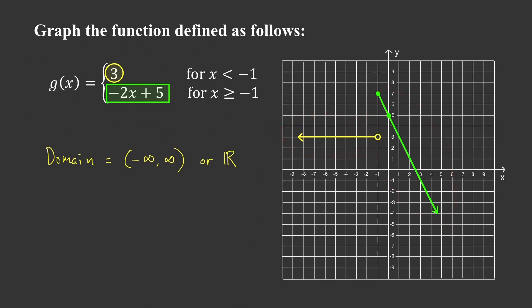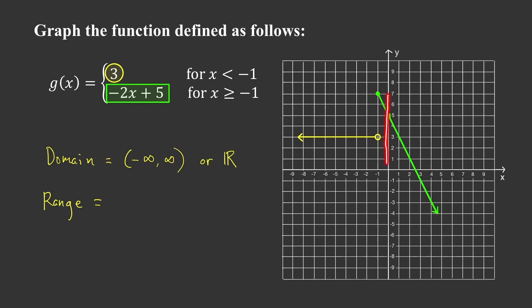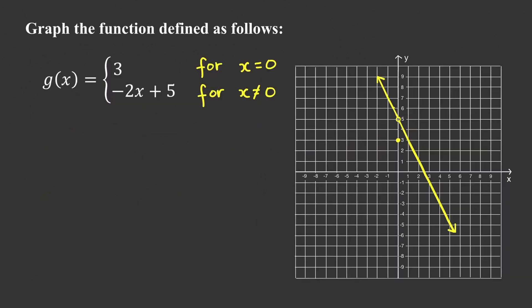For the range, we look at the set of resulting y values — the y coordinates of the points on the graph. You can only have y values less than or equal to 7. If you draw a horizontal line above 7, it won't intersect the graph, so there is no point giving a y value greater than 7. The range is the set of all real numbers less than or equal to 7, or in interval notation, negative infinity to 7 including 7.